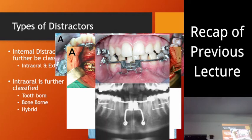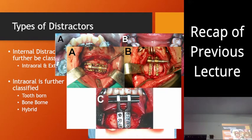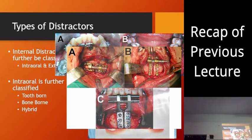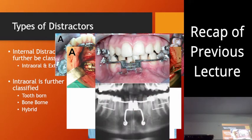The advantage of the hybrid is that it avoids the disadvantages of tooth-bone and bone-bone. For example, in bone-bone, the force is applied at the lower border of the mandible. The mylohyoid muscles on both sides pull the inferior border inwards, so the mandible slightly opens up, creating a V-shaped gap at the teeth level. This can be avoided using the hybrid distractor, which won't allow the V-shaped flaring of the arch.